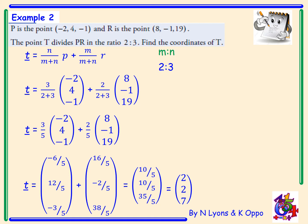And again, we were asked for the coordinates of T, not the components. Therefore, T is (2,2,7) written horizontally.